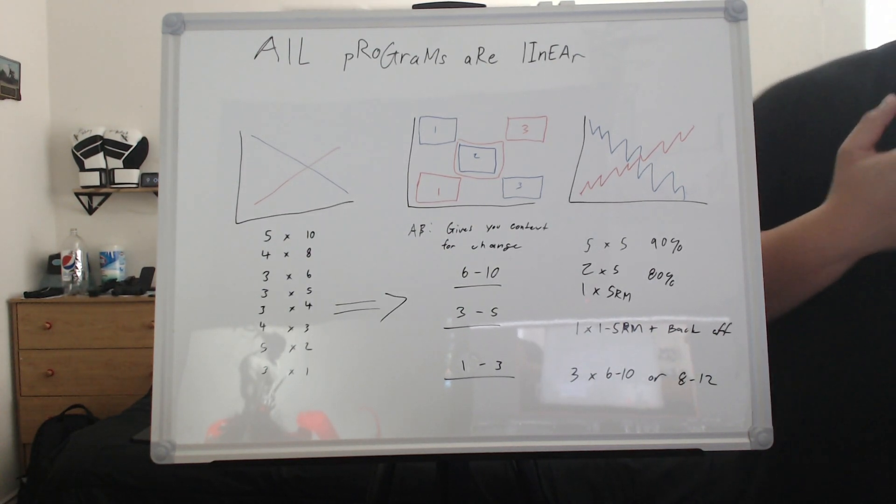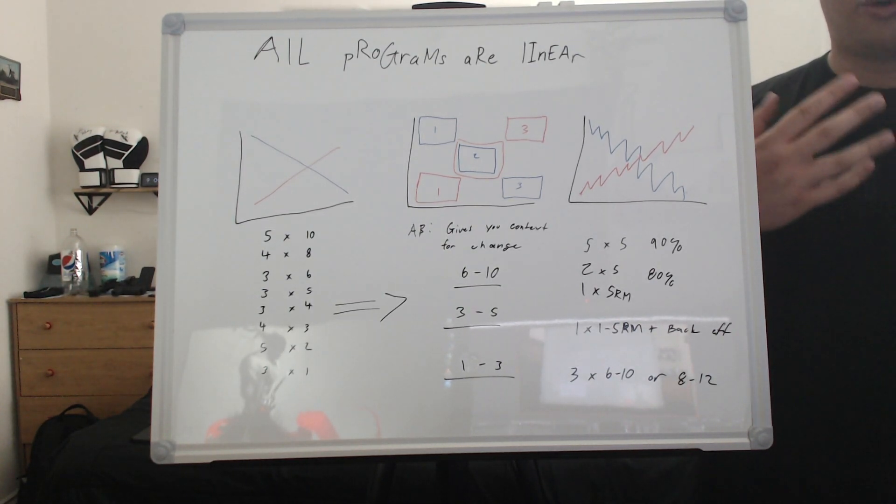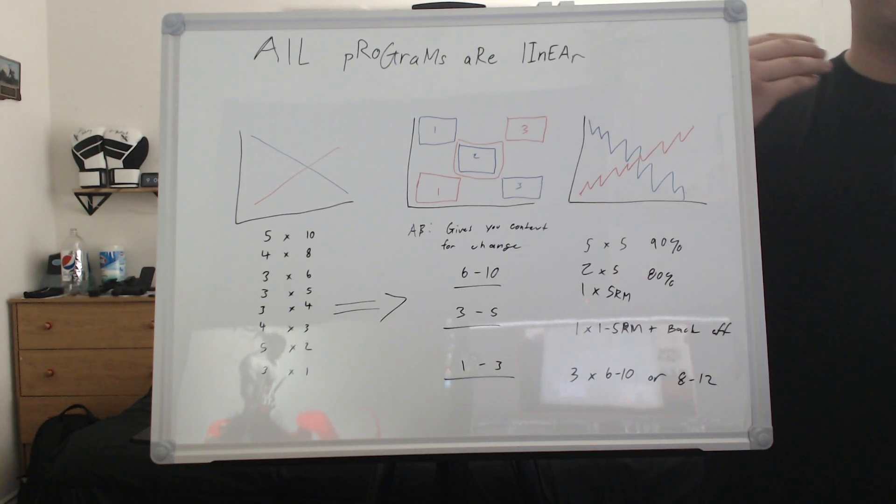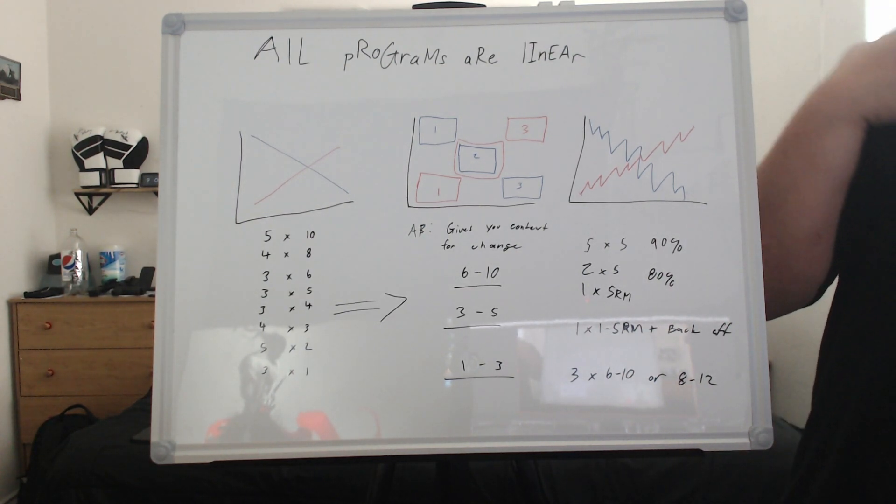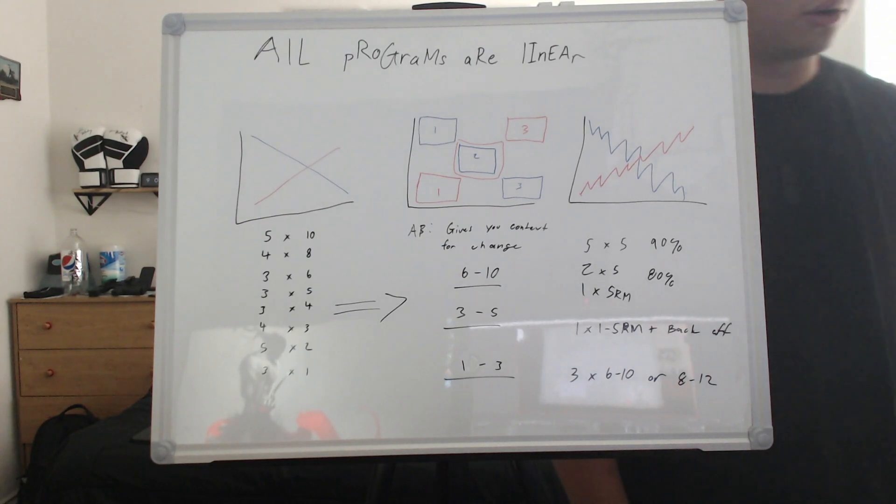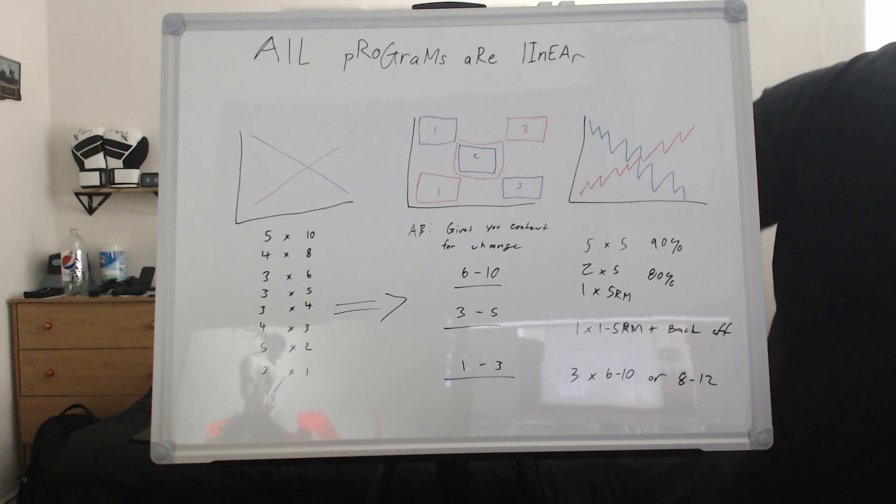So when it comes to the claim that I made, I said all programs are linear. Now, this is really what I mean by that: all programs have an element of linearity, meaning you're going to be increasing or decreasing a certain variable across a certain amount of time. The main differences across certain types of progressions, across different types of periodizations, is how uninterrupted those are.